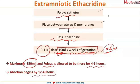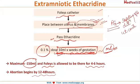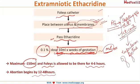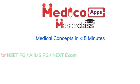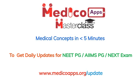How does it act? It causes separation of the membranes from the uterus, and thus the membranes start producing prostaglandins. These prostaglandins cause softening of the cervix, dilatation of the cervix, and initiate uterine contractions — and all these processes together cause expulsion of the foetus.